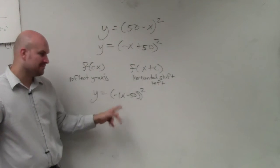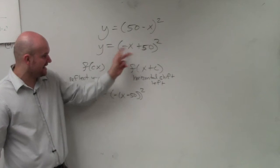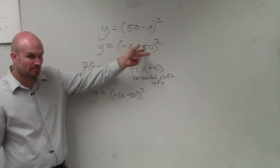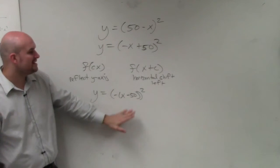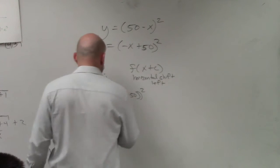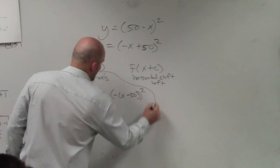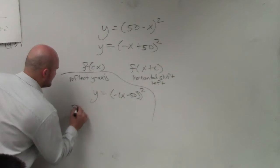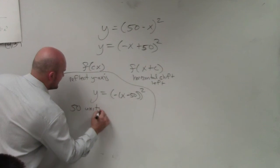And therefore, now you can see, did I change the problem? No. Negative 1 times x is negative x. Negative 1 times negative 50 is still positive 50. There's no difference. But now it's written in this format that is correct. It's still reflect y-axis, but now you guys can see not only does it reflect the y-axis, but it's 50 units to the right.